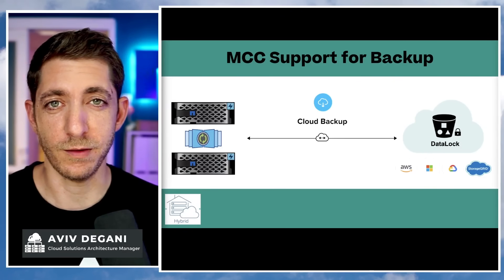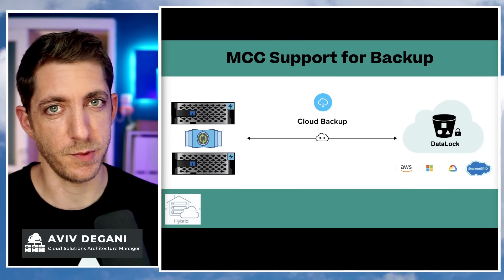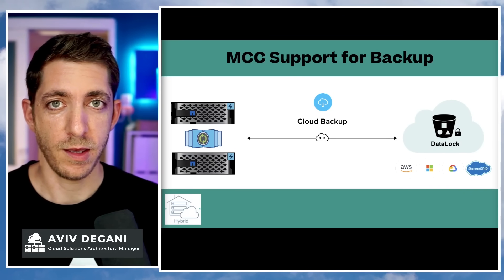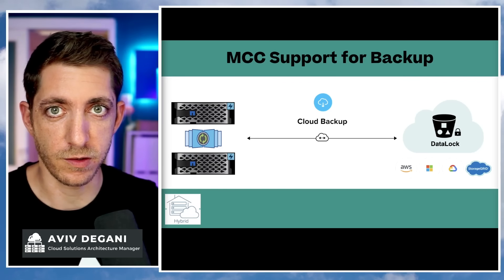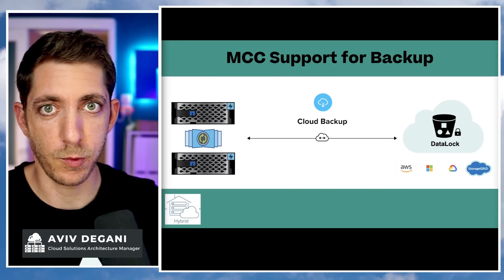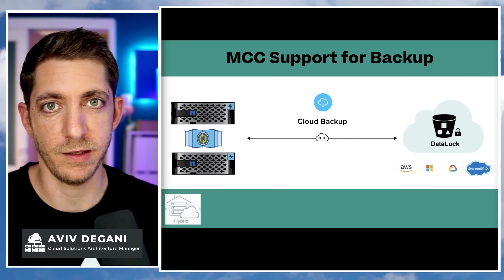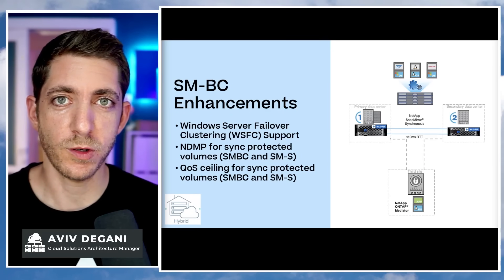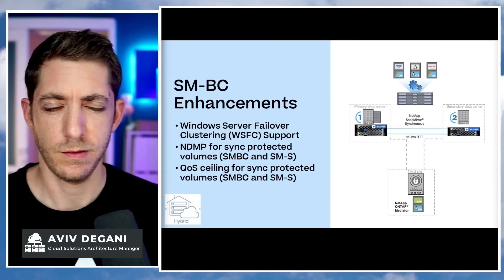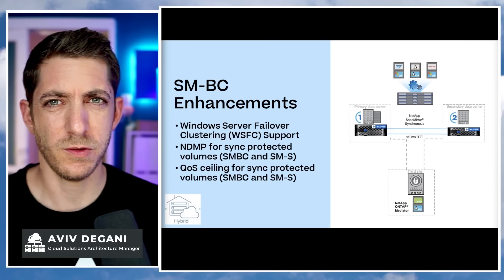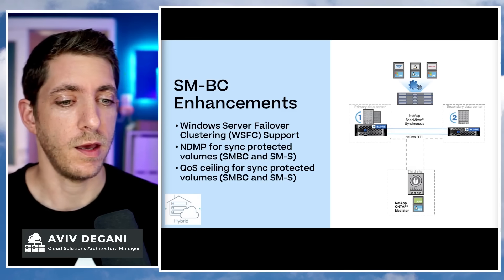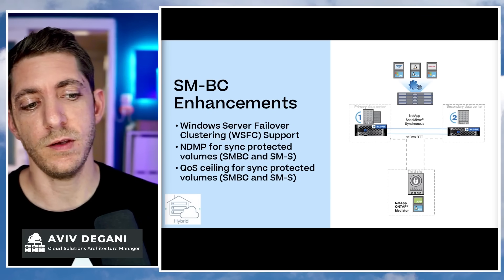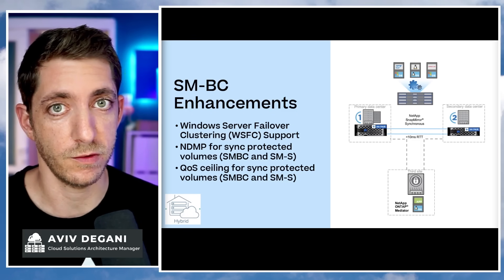MetroCluster — which is a big hit, mostly in Germany and Israel — can now be protected using Cloud Backup. In the case of a failover and a disaster, Cloud Backup will automatically pick up from the secondary. SMBC can now support Windows Failover Cluster. And there's QoS ceiling support for sync-protected volumes, SMBC, and SnapMirror Synchronous.